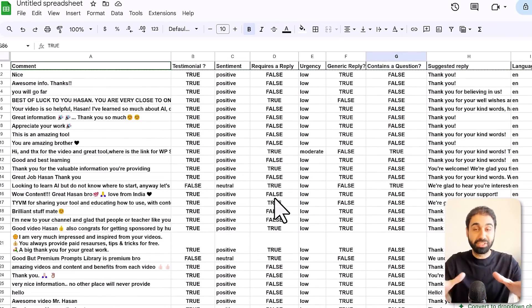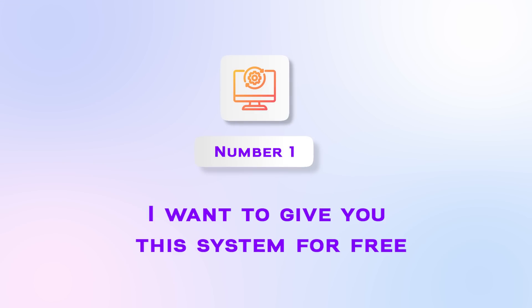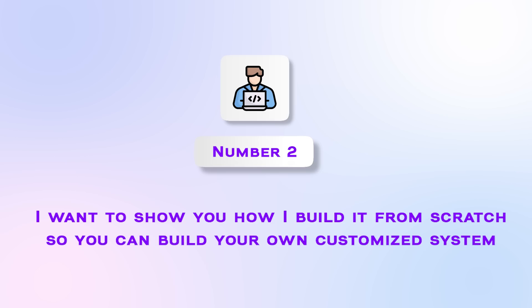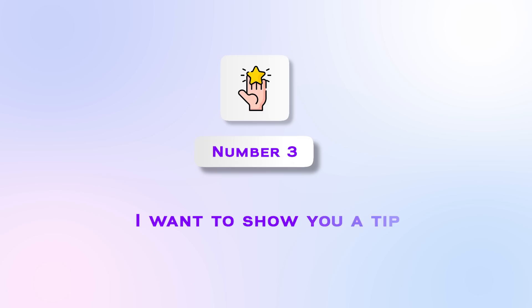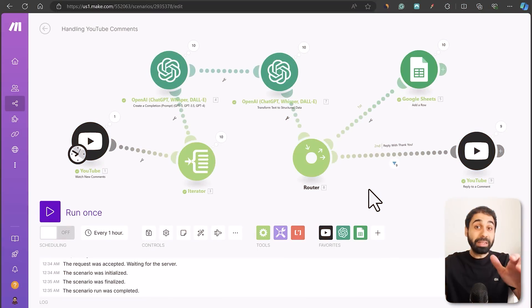I still have three things to share today: number one, I'll give you this system for free; number two, I'll show you how I built it from scratch so you can build your own customized systems; and number three, I'll share a secret tip that will help you build a stable recurring income with these systems. To replicate the system inside your account, go to Scenarios in Make and click Create a New Scenario.